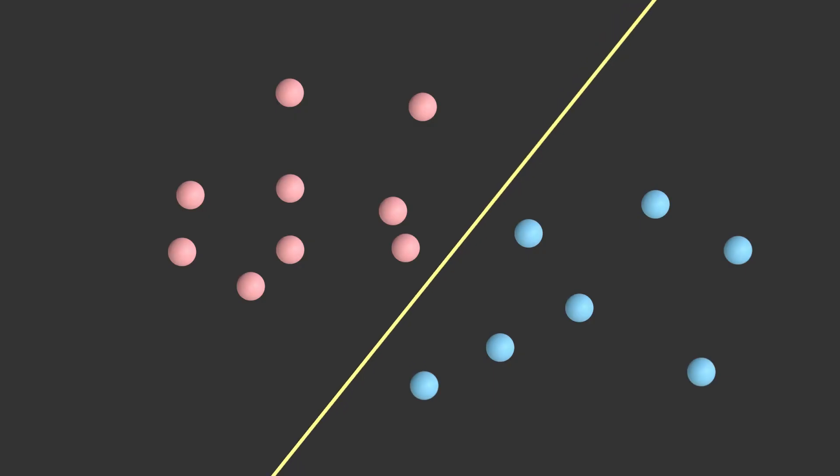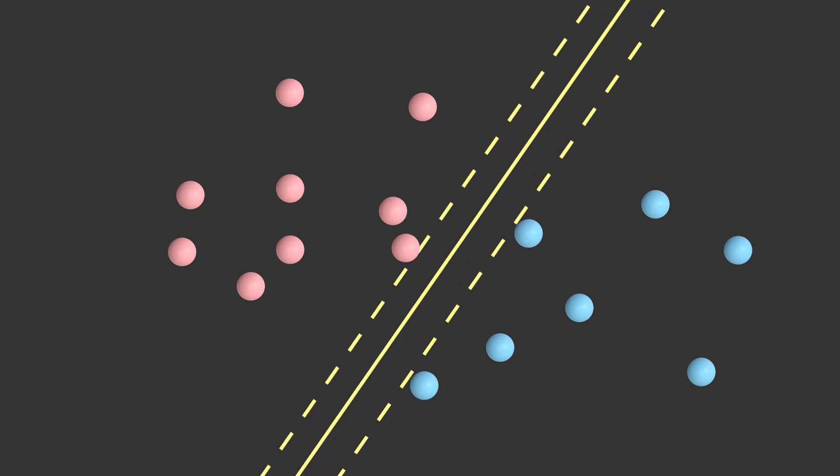While there could be multiple such hyperplanes, SVM tries to find the one that best separates the two categories, in the sense that it maximizes the distance to points in either category. This distance is called the margin, and the points that fall exactly on the margin are called the supporting vectors.